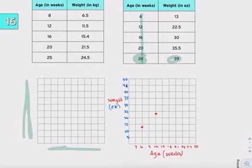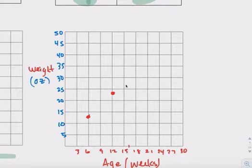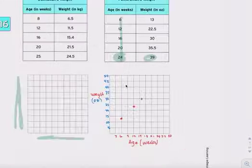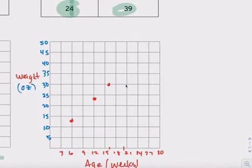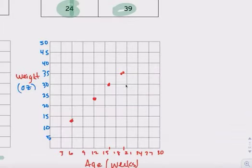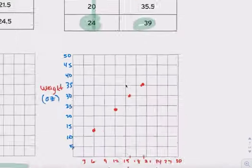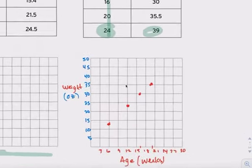So 16, 16 and 30. 16 is about right there. Go up to 30. And then 20, 35.5. 20 is about right there. 35.5. Let's just say 35. It's good enough. It's scatterplot. And then, 24, 39.